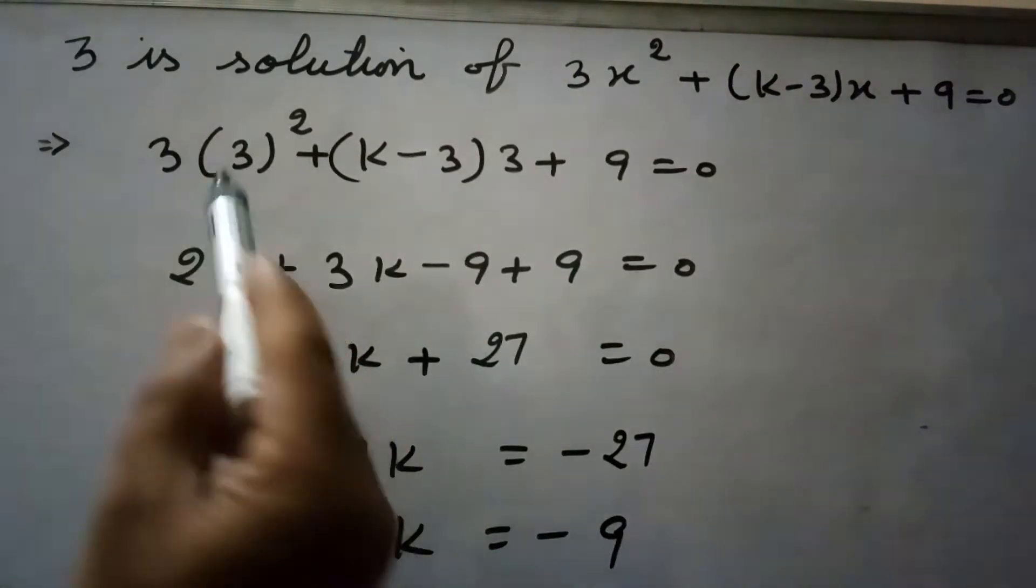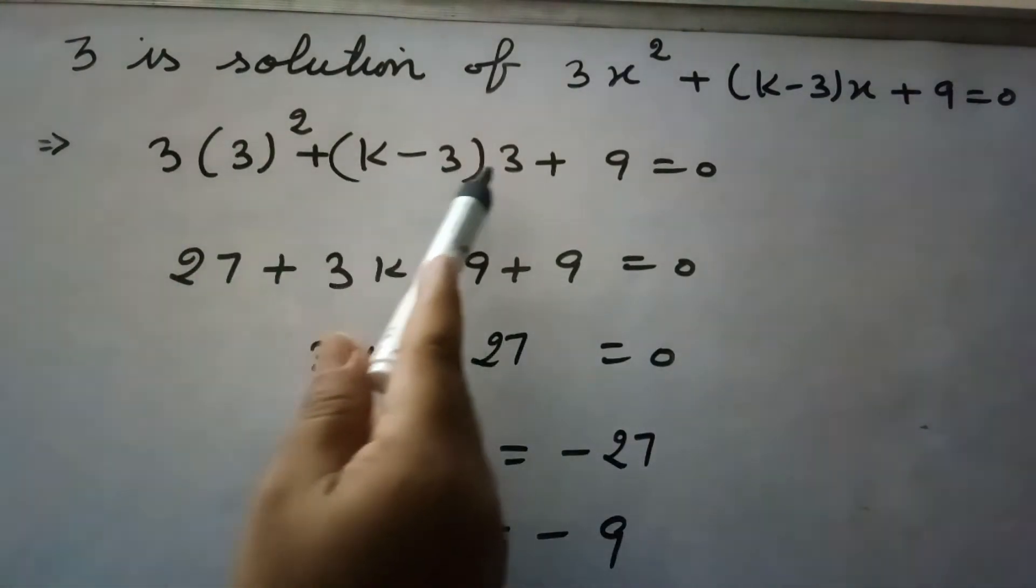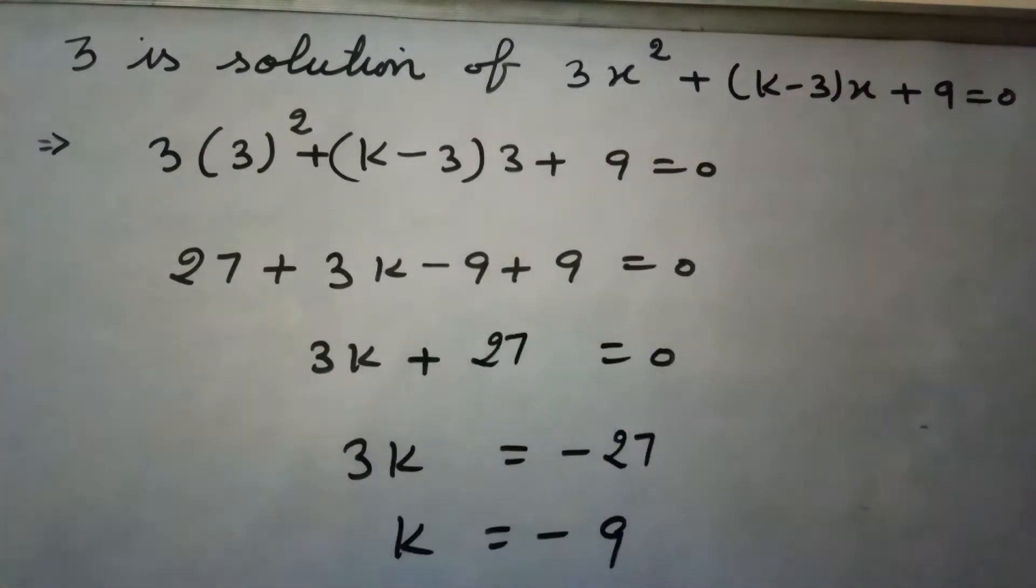Now we will put the value of x equals to 3 here. So it is 3 into 3 square plus k minus 3 into 3 plus 9 equal to 0.